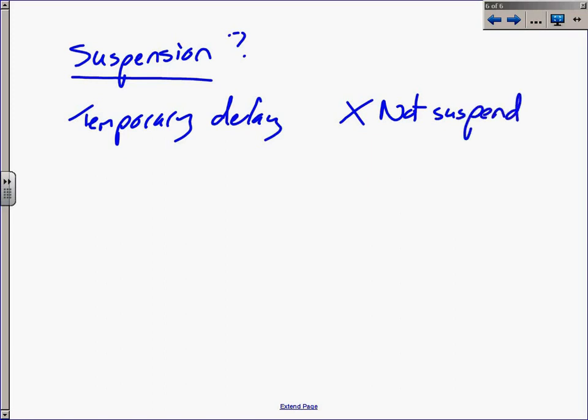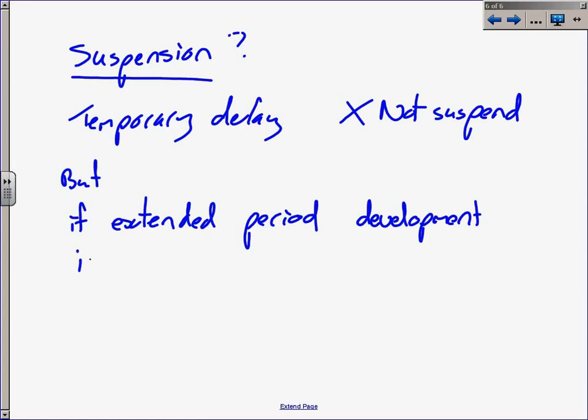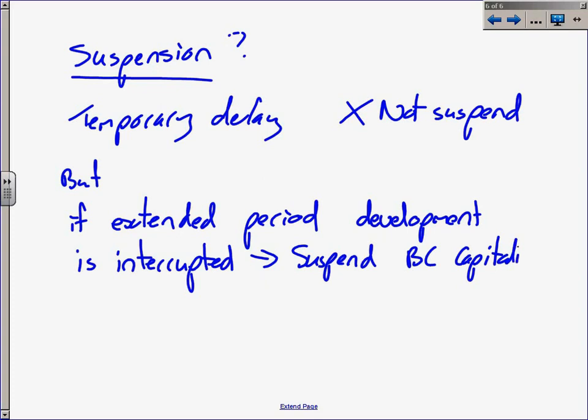But if there is an extended period where the development, construction, or production is interrupted, and this is not part of the normal process of constructing that asset, then you will suspend borrowing costs so that you don't overstate the capitalization. For that period, you will just expense your borrowing cost capitalization.